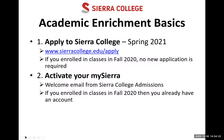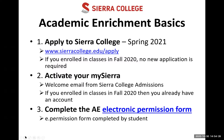This webinar is now going to focus for the next four or five minutes on completing step three: your electronic permission form. You'll find the link to that permission form on our website. Let's go to the website now and see what that looks like.